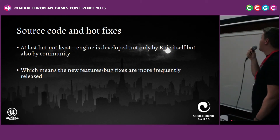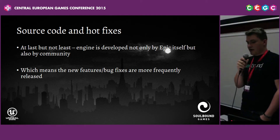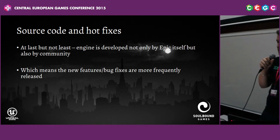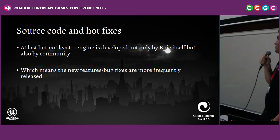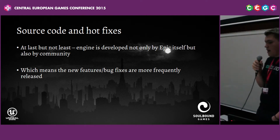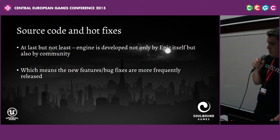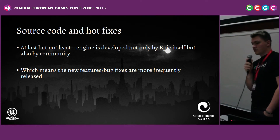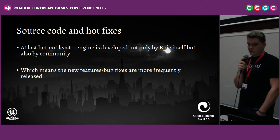With Unreal Engine, you can fix everything yourself if you have the knowledge. Also, it's developed not only by Epic but also by the community, so new features and bug fixes are released much more frequently than in Unity. In Unity you can wait for a bug fix forever. But in Unreal Engine 4, Epic releases updates more frequently, and the community helps with contributions. Also, the official Epic Unreal Engine roadmap is on Trello, where you can vote for features — and Epic actually listens and releases the most-voted features within one or two iterations.